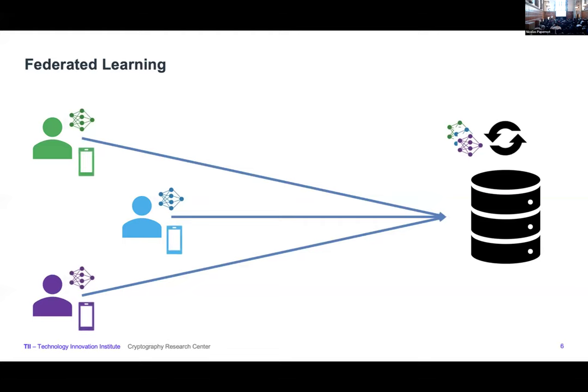Now consider some weak devices — mobile devices — and a scenario where the model is quite large. Recently, LLMs and similar models have millions of parameters.